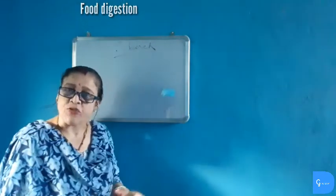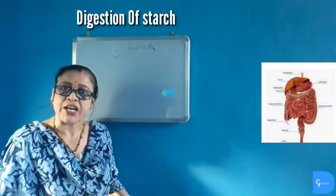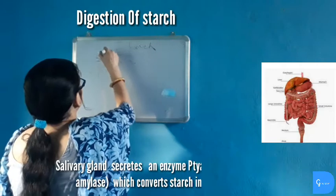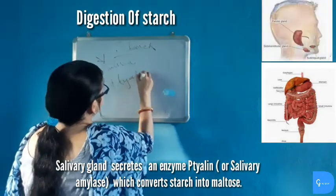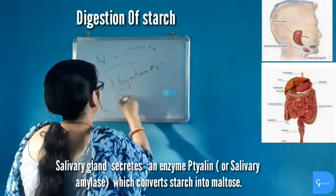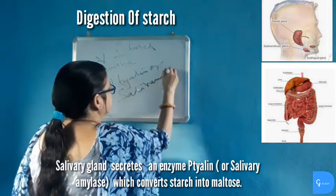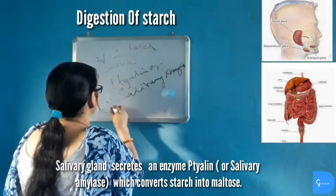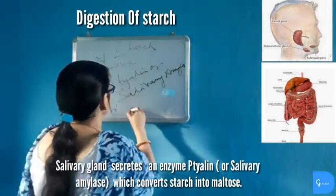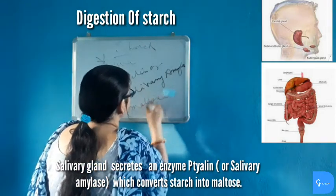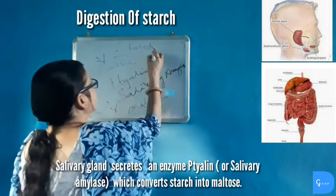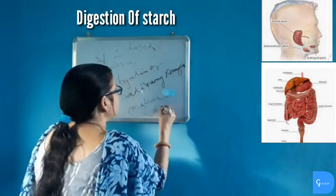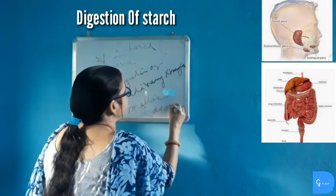When we intake food, we chew and masticate with the help of teeth and tongue. The salivary gland secretes saliva which contains an enzyme called ptyalin or salivary amylase. This salivary amylase reacts on starch and breaks it down into maltose, which is a disaccharide. Starch or carbohydrate is taken by us as a polysaccharide and is now transformed into the disaccharide maltose.